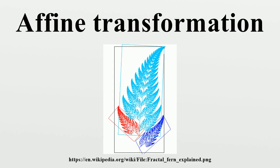For example, if the affine transformation acts on the plane and if the determinant of A is 1 or minus 1, then the transformation is an equi-areal mapping. Such transformations form a subgroup called the equi-affine group. A transformation that is both equi-affine and a similarity is an isometry of the plane taken with Euclidean distance. Each of these groups has a subgroup of transformations which preserve orientation — those where the determinant of A is positive. In 3D, the last case is the group of rigid body motions. If there is a fixed point, we can take that as the origin, and the affine transformation reduces to a linear transformation, which may make it easier to classify and understand the transformation.